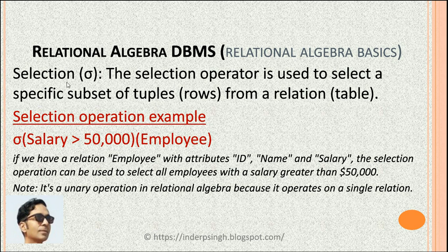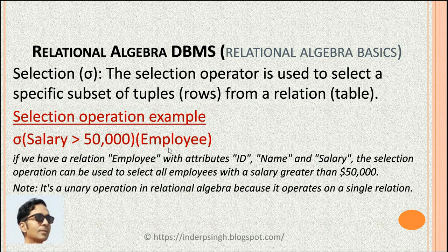Selection is a relational algebra operation and the symbol for selection is sigma (σ). The selection operator is used to select a specific subset of tuples from a relation. For example, the selection operation sigma salary greater than 50,000 on employee means: given an employee table with columns id, name and salary, we select all employees with a salary greater than $50,000. Note that selection is a unary operation, meaning it operates on a single relation.